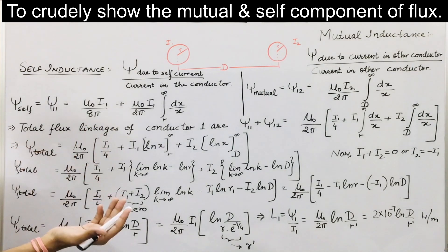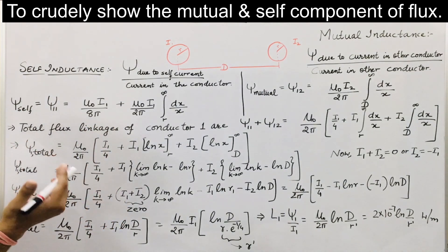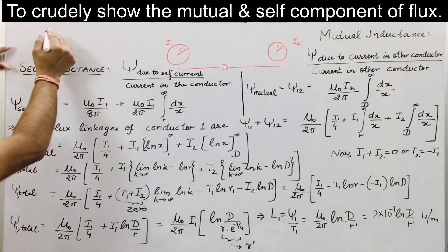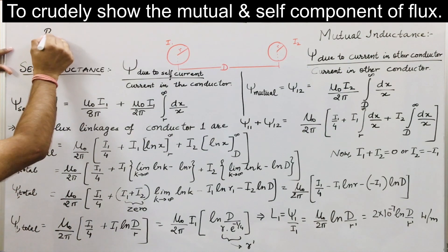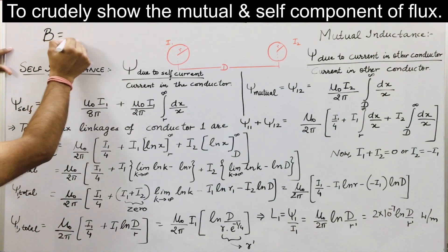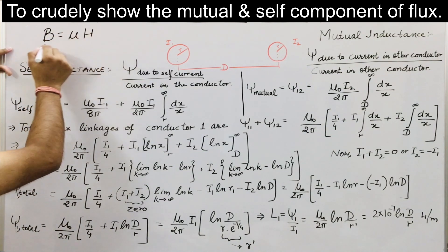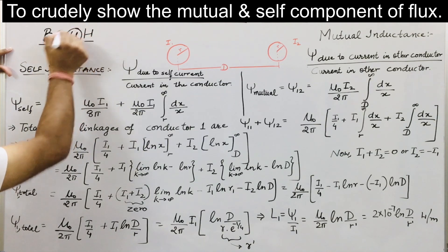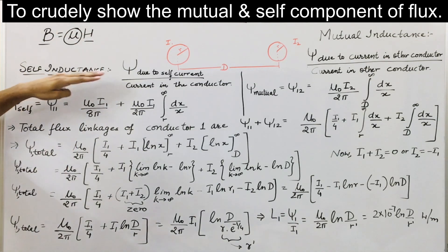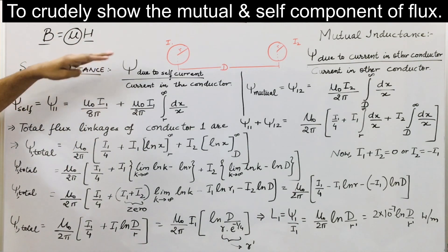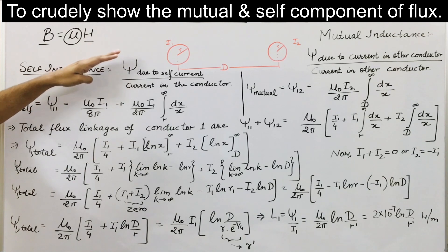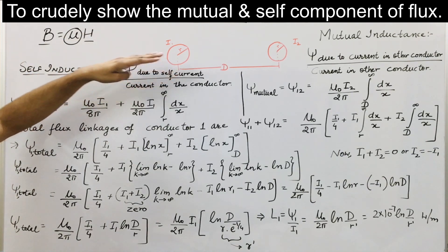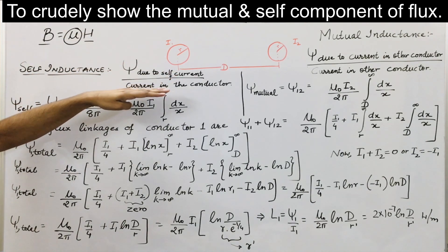Since we have already assumed the circuit is linear — that is, the condition B equals mu H is satisfied and mu is a constant — the inductance will be constant and can easily be found by dividing the flux linkages by the current.